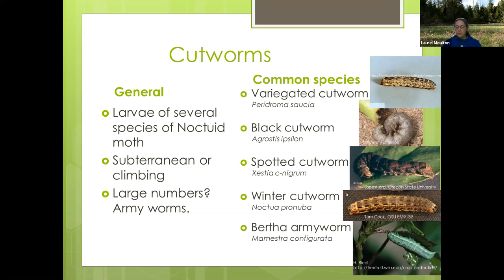Some of the species we see around here — not a comprehensive list, just the most common — include the variegated cutworm, which you can identify by the spots along its back, about seven yellow spots. The black cutworm is typically gray to black with a tan stripe on its back. There's also the spotted cutworm, which has chevron marks along the side.